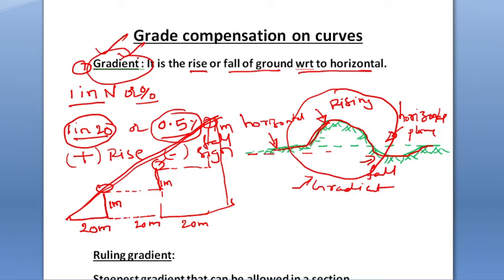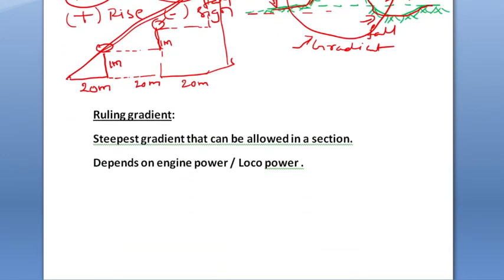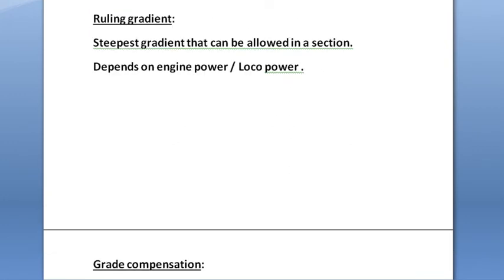Now let us look at the next concept called ruling gradient. According to the definition, ruling gradient is the steepest gradient or maximum gradient that can be fixed or allowed in a section. This ruling gradient is fixed based on the engine power or loco power of the vehicle moving over that gradient.